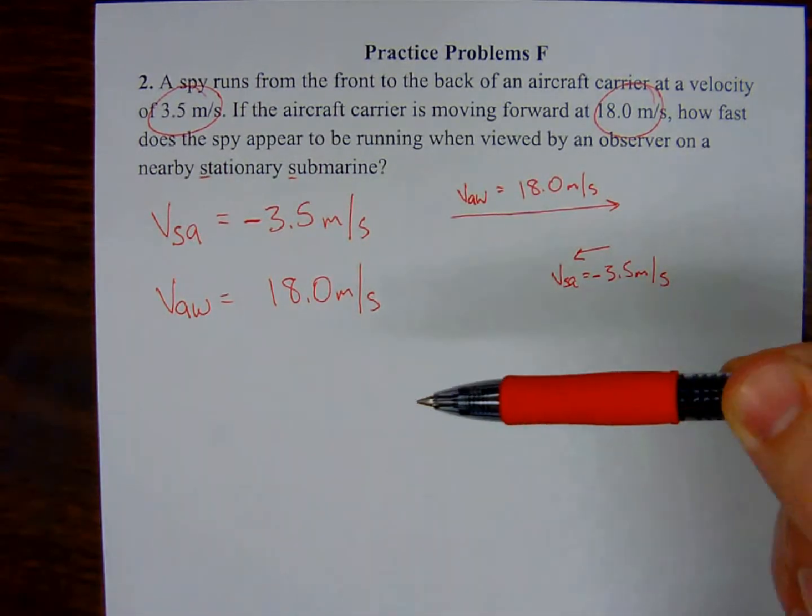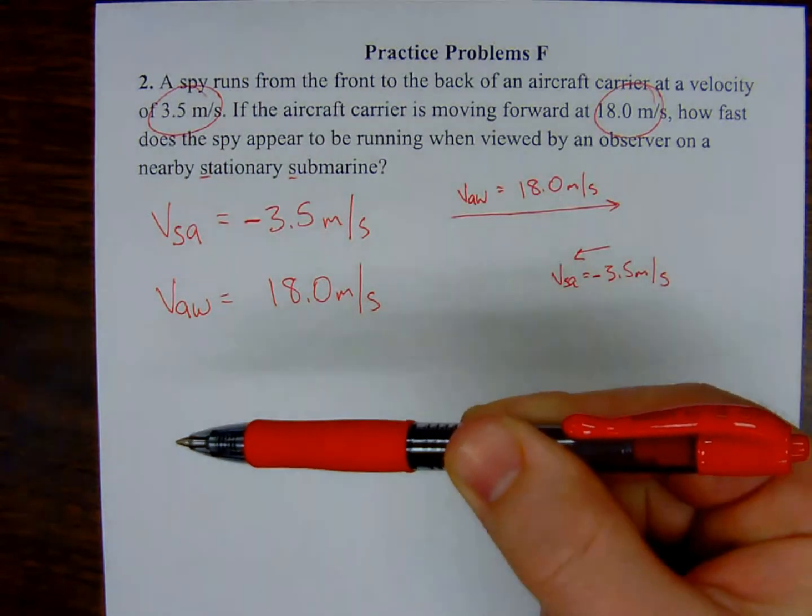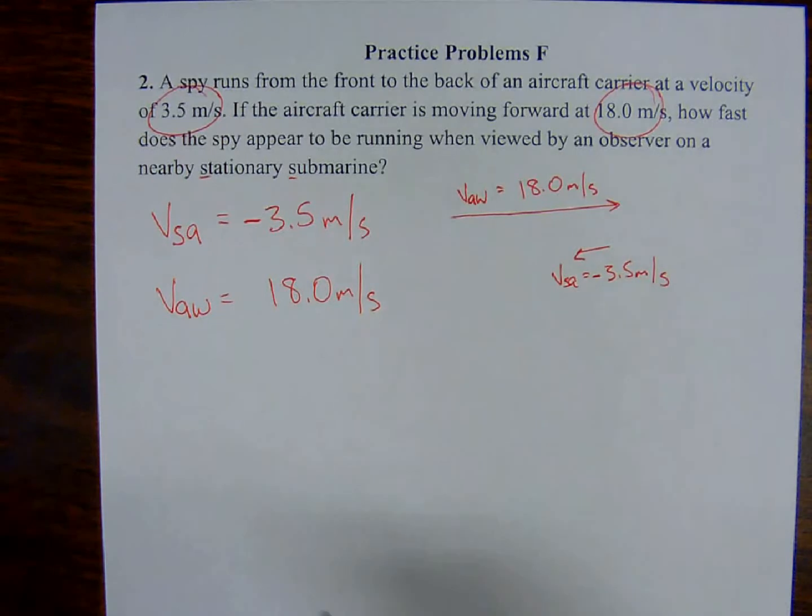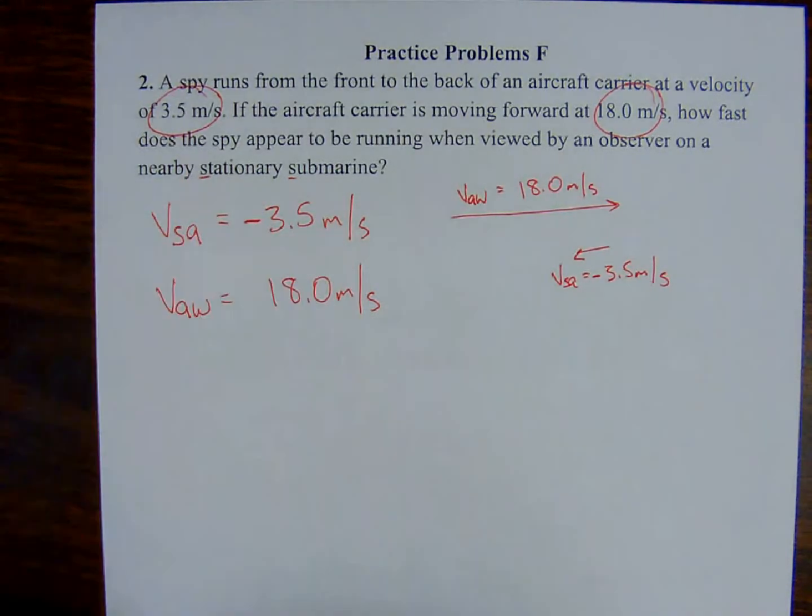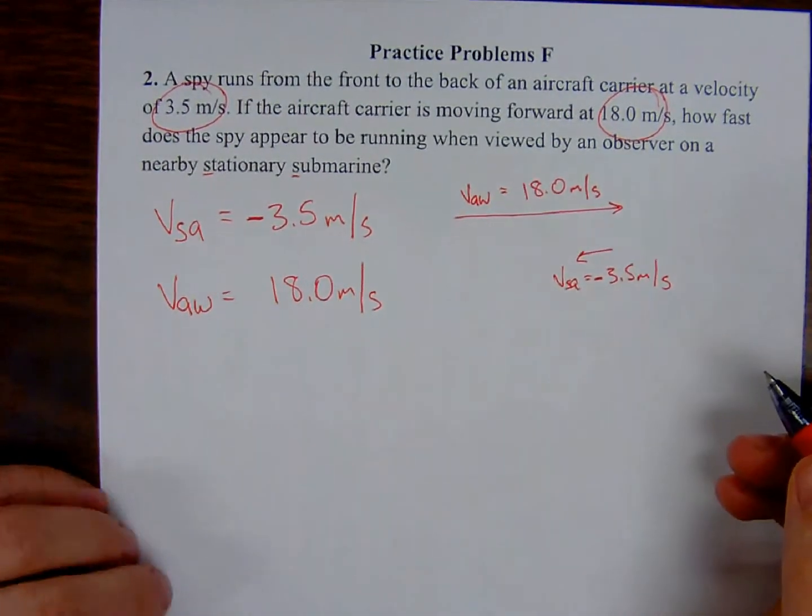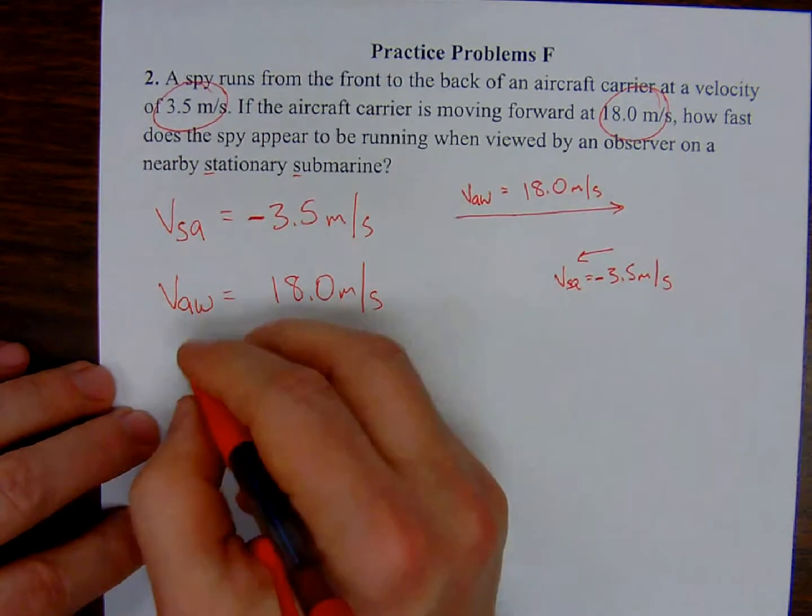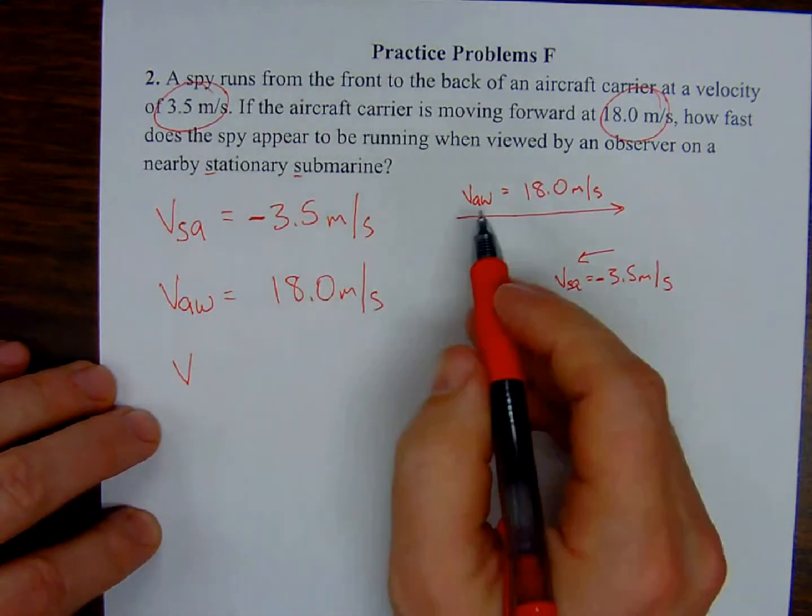So let's represent that mathematically. So we have the velocity of the spy with respect to water. Because we're talking about an observer on the stationary submarine floating in the water. So velocity of the spy with respect to the water is going to be the sum of these two things, these two motions.